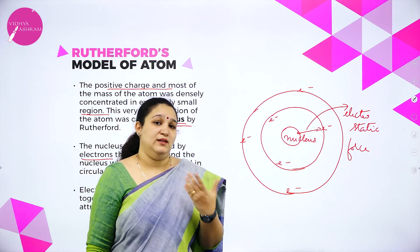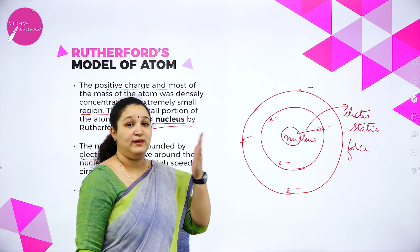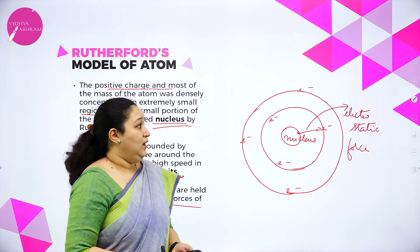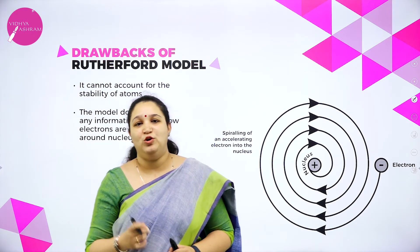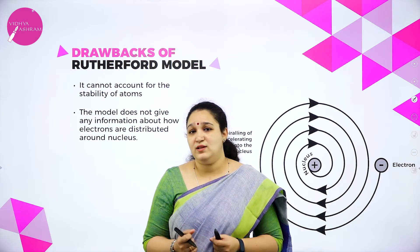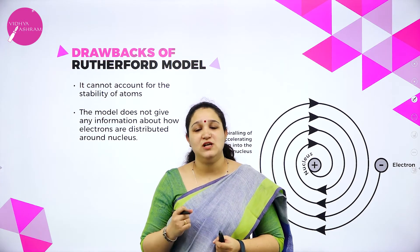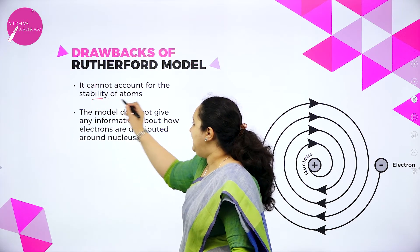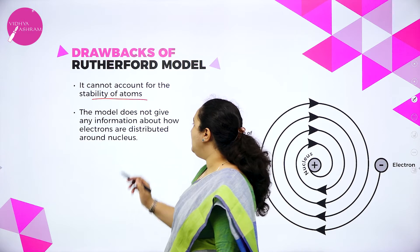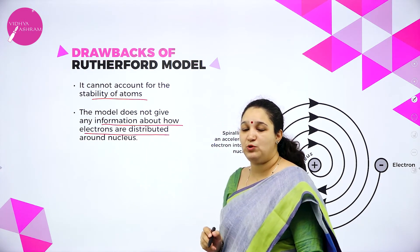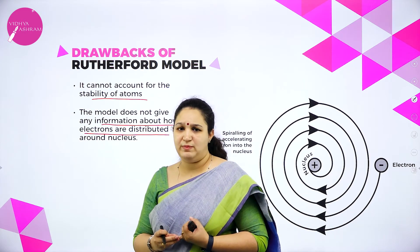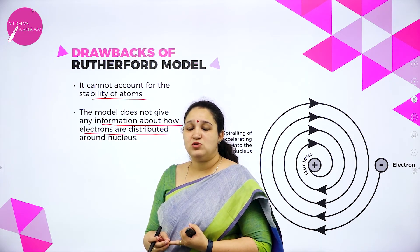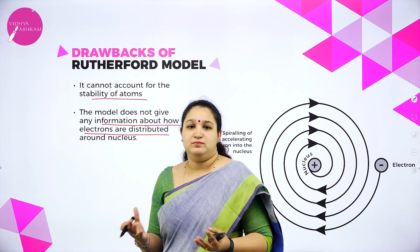I hope you understood the alpha scattering experiment — what was observed, what were the conclusions, and what Rutherford proposed in his nuclear model. Next are the limitations of Rutherford's atomic model. This is not the accepted model. The first limitation is it cannot account for the stability of atom. Also, the model does not give any information about how electrons are distributed around the nucleus.